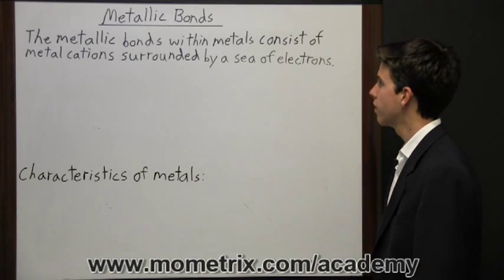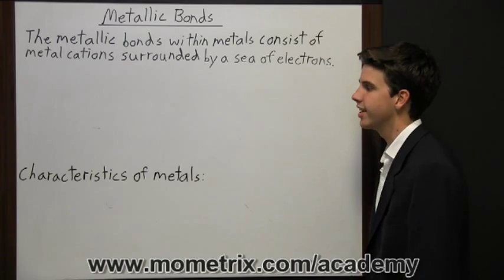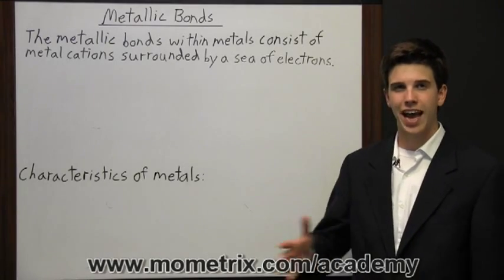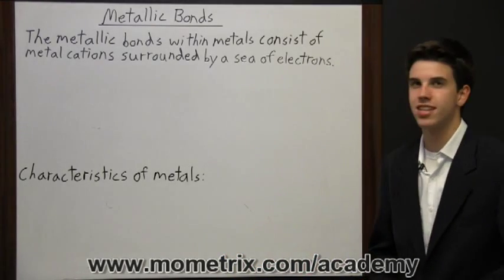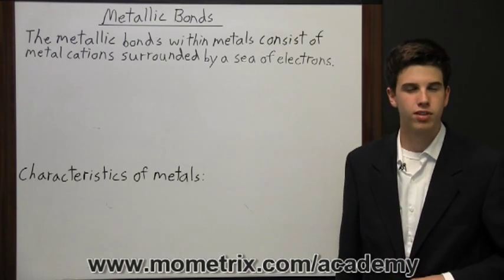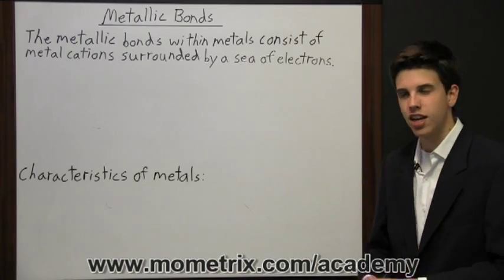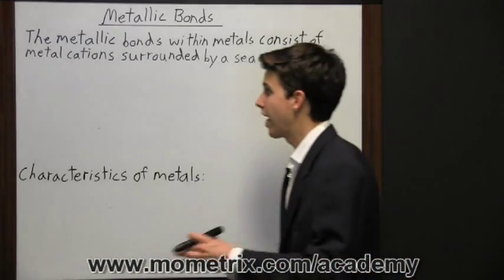The metallic bonds within metals consist of metal cations surrounded by a sea of electrons. The outer electrons are delocalized in that they are not associated with any particular atom of the metal. The delocalized electrons allow metals to be soft and able to be shaped or malleable.